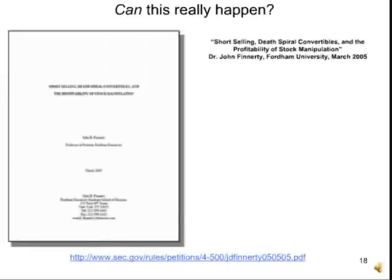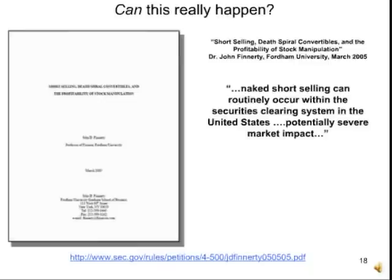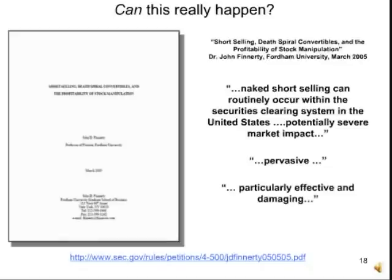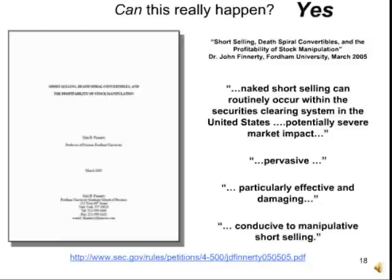The possibility that this has been going on has been kind of an urban myth for the last 10 years, but can it really occur? That question was taken up by a Fordham University economist named John Finnerty. He wrote a highly mathematical paper asking: given the way our regulations work, could this really happen? He says naked short-selling can routinely occur within the securities clearing system in the U.S. with potentially severe market impact. In fact, it seems to be pervasive. It's a particularly effective and damaging method, and our system is actually conducive to this manipulative short-selling. So his answer — can this really occur — is absolutely yes.